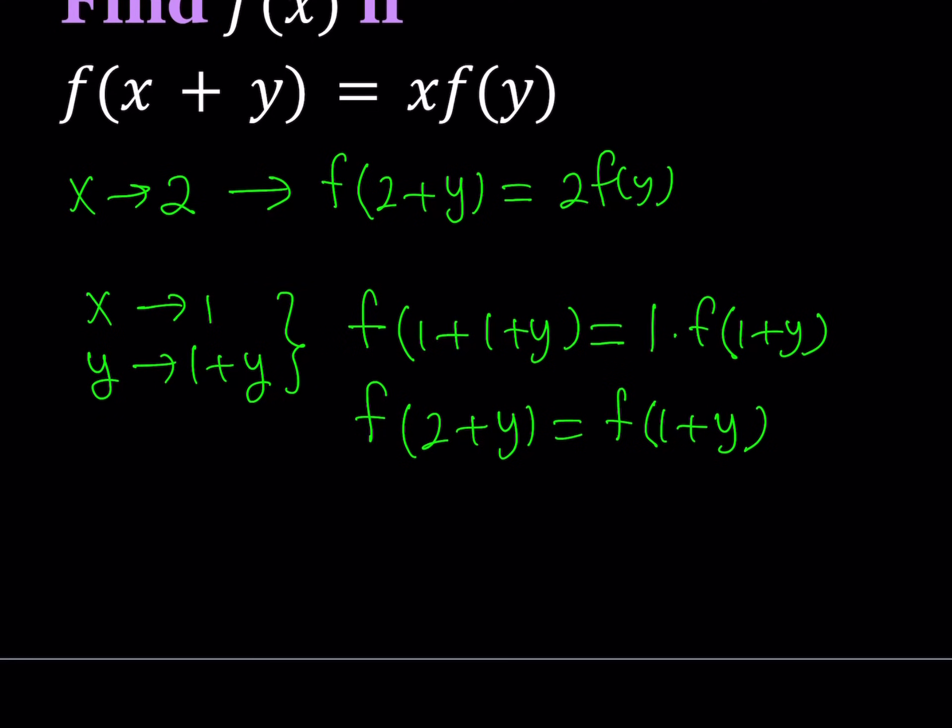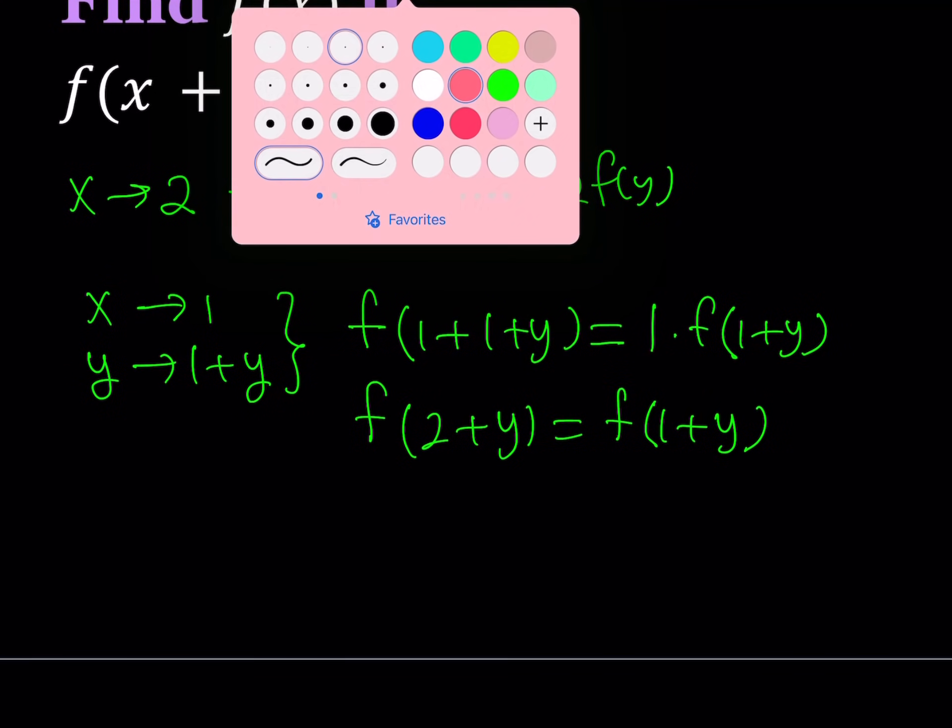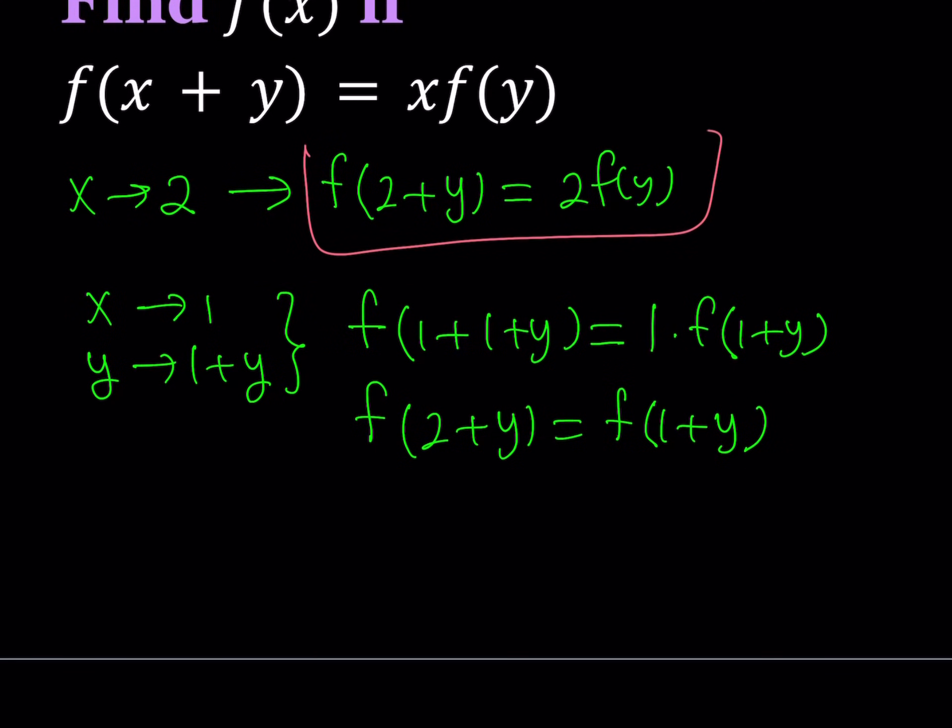Now, I was trying to get f of 2 plus y in two different ways, and I did. So, this is f of 2 plus y, and this is f of 2 plus y. Since two things are equal to the same thing, then they're equal. So, I can safely say that from here, 2 times f of y is equal to f of 1 plus y.